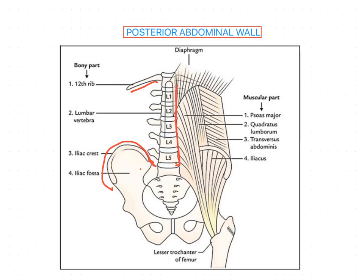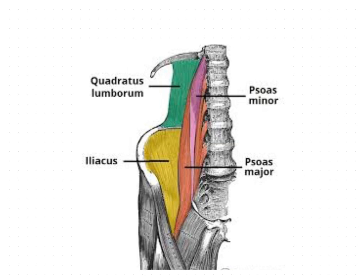This is the skeletal framework which helps in the formation of the posterior abdominal wall. Now we will see what muscles form the posterior abdominal wall. One is the psoas major muscle, then psoas minor. The next muscle is the quadratus lumborum, and iliacus. These are the four major muscles which form the posterior abdominal wall, and superiorly the diaphragm also forms part of it.